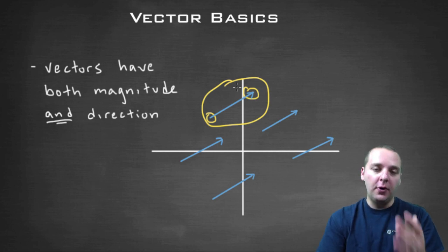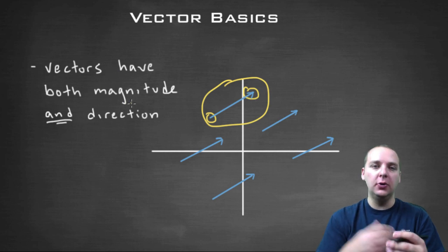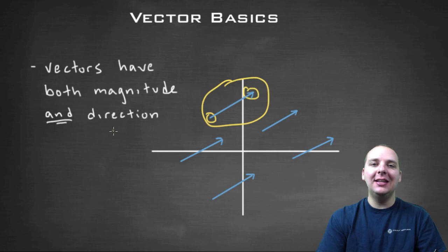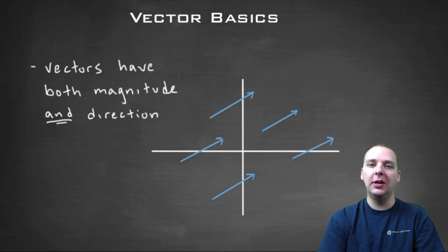Now for a vector though, a vector has both a magnitude, which is a length, and it has a direction, but it doesn't necessarily have to have a certain initial and terminal point. So here's the subtle difference between a line segment and a vector.